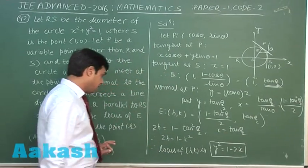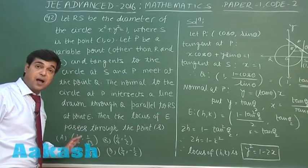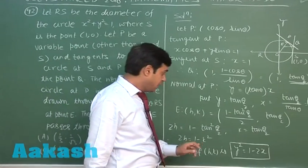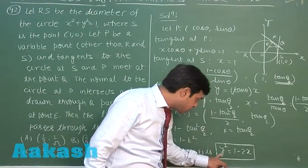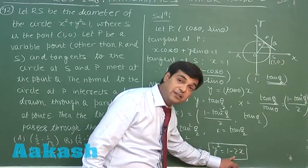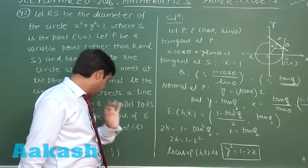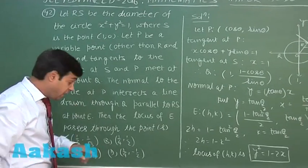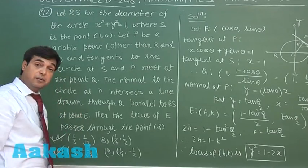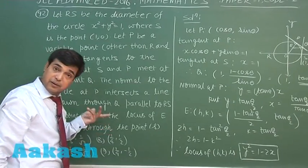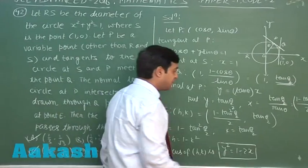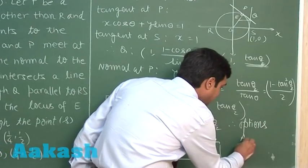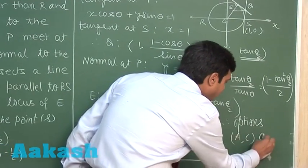The question asks which of the given points lie on this curve y² = 1 − 2x. Putting (1/3, 1/√3): (1/√3)² = 1/3 and 1 − 2(1/3) = 1/3. So the point (1/3, 1/√3) lies on the curve. Similarly, (1/3, −1/√3) also lies on the curve since y² is involved. Options B and D are not lying on the curve.